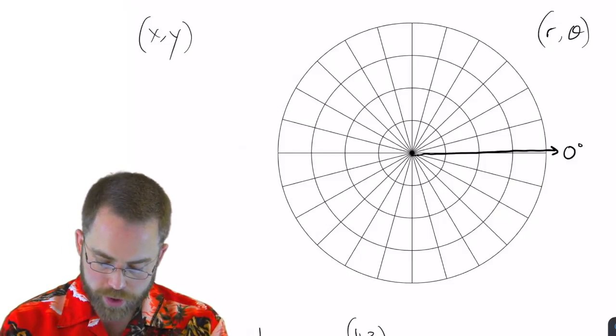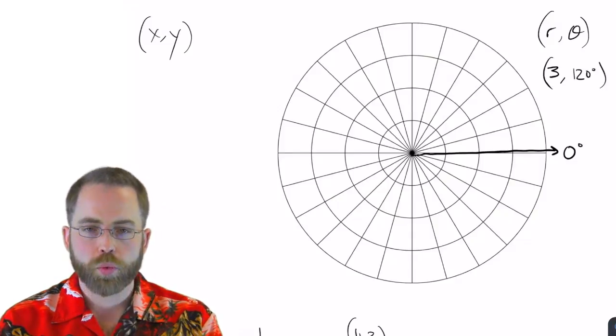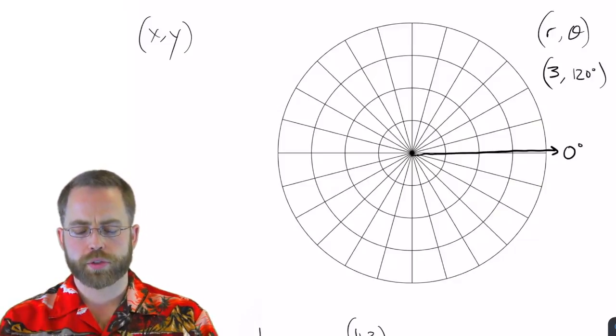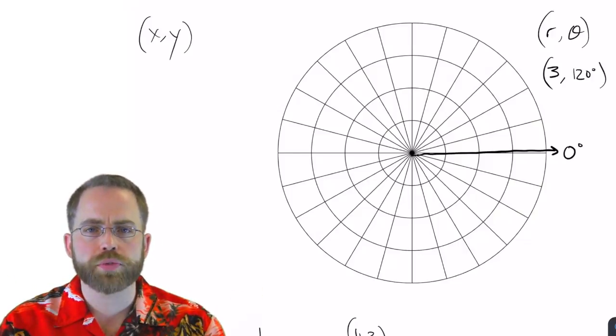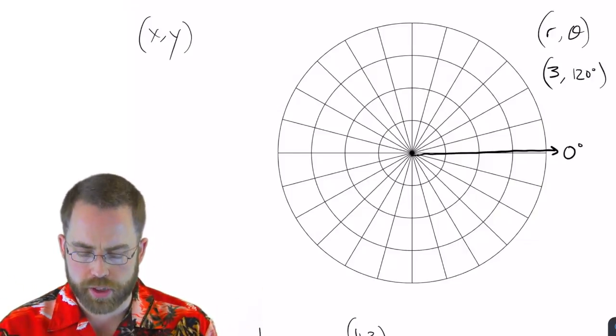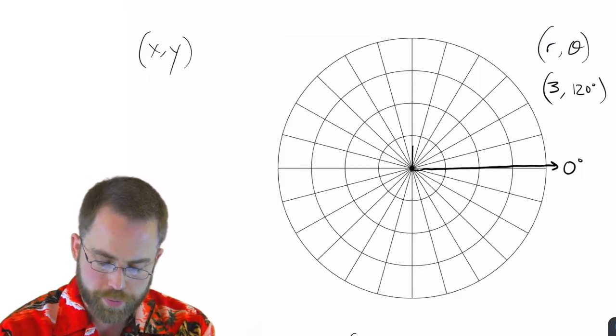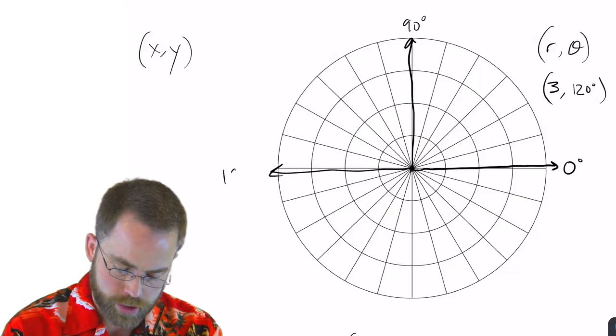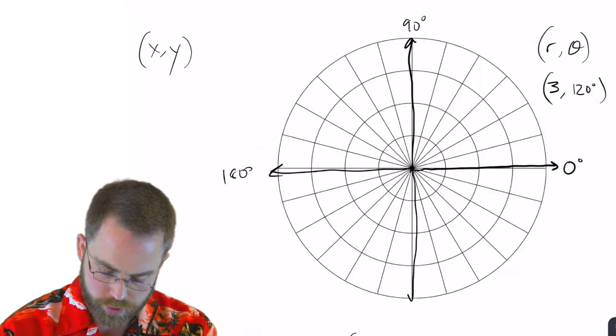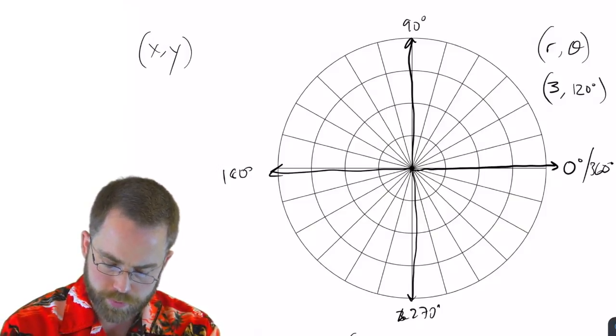Okay, so for example, if we wanted to say 3 comma 120 degrees, where is that? Well, first of all, let's try to orient ourselves. What are these little angles flying out here? What are the angles that they're giving us? Well, clearly, we remember that all the way around is 360. Straight up is 90 and 180 and 270. Those are the good guys. Those are the easy ones to remember. But they've given us more than that.